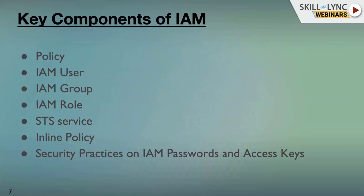There is a more advanced concept known as IAM Role. IAM users and groups are targeted toward particular users, whereas a role is specific to a particular AWS resource. For example, an EC2 instance that wants to access an S3 bucket or another AWS service can do so using an IAM role — one AWS resource can access another using an IAM role. Within the role, we define policies specifying what the EC2 instance can do. The STS (Security Token Service) is a key concept for understanding how IAM roles work in the backend.